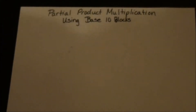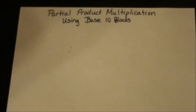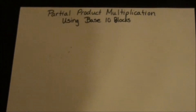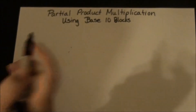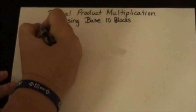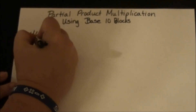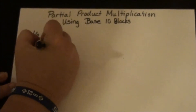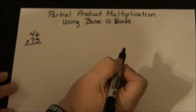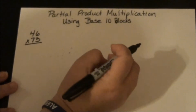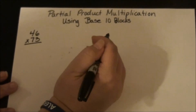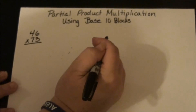This strategy is partial product multiplication using base 10 blocks. You initially teach this with the base 10 blocks, but then students learn the symbols for the various blocks to help them do this. Let's start with the problem 46 times 73. Children should be familiar with arrays by now, where there are columns and rows, and this strategy leans heavily on that concept.